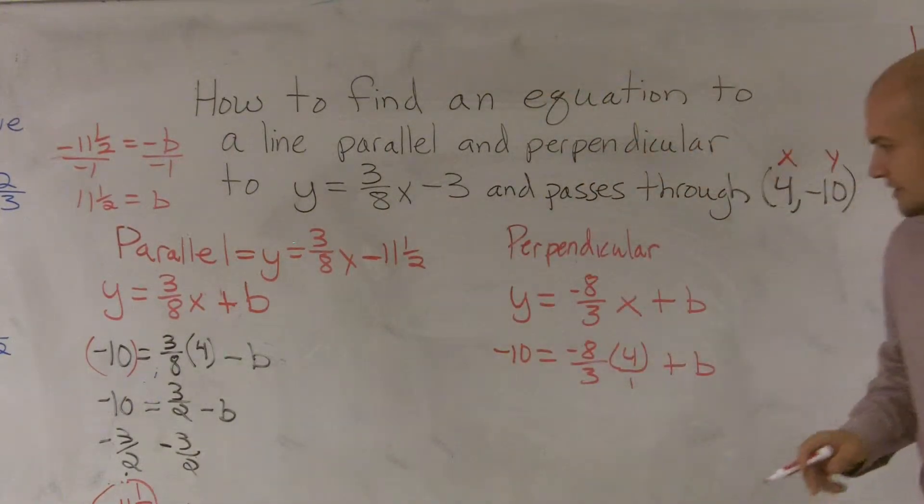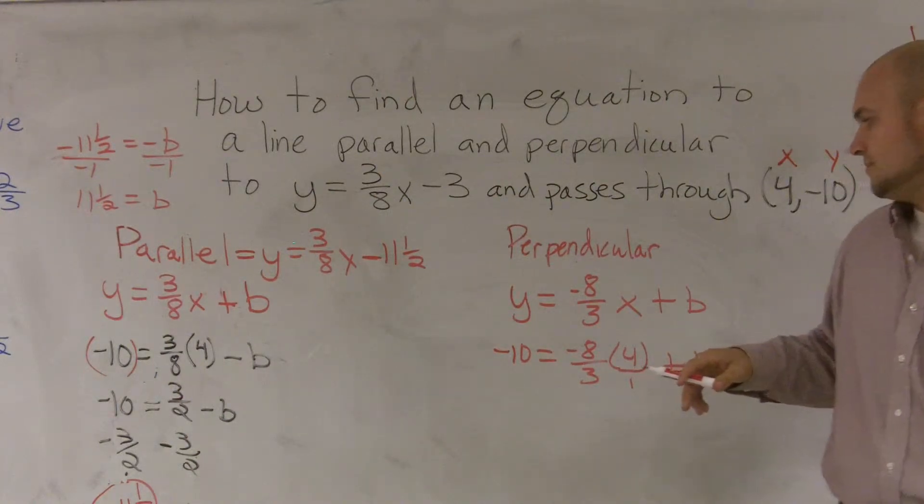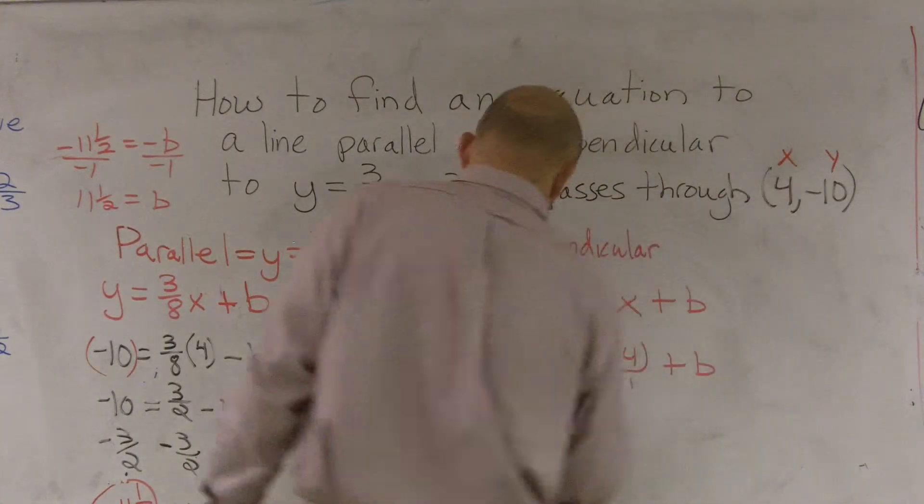I'll change that over to 1 just so I can notice when I'm multiplying my fractions. And this is not what I was hoping for, but we'll go and work with it. So we have negative 10 equals 4 times negative 8 would be negative 32 divided by 3.